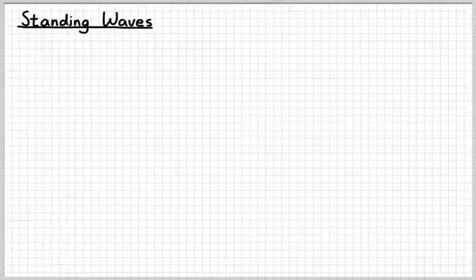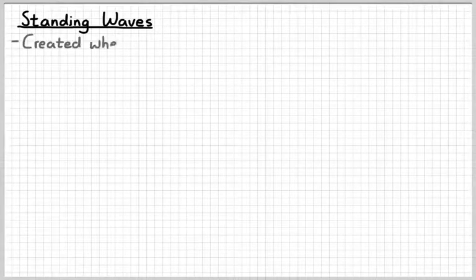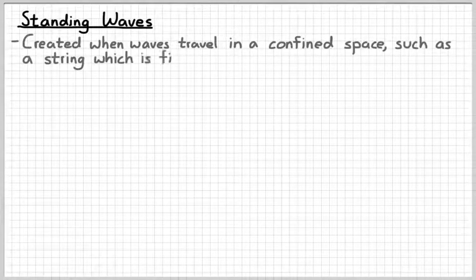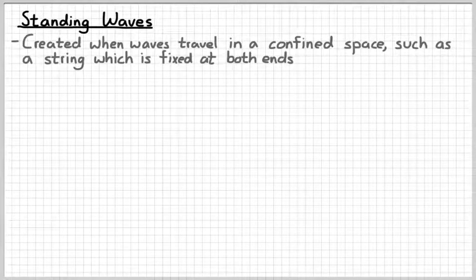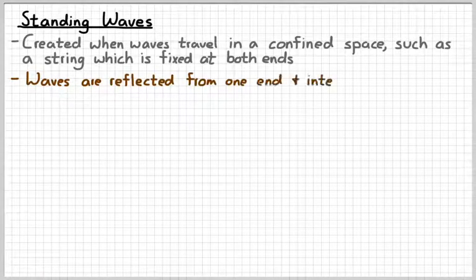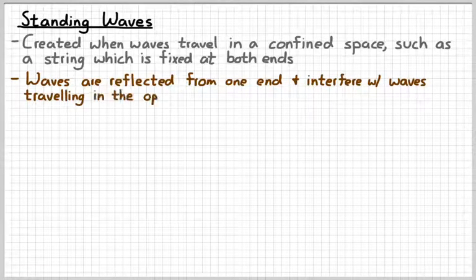In this video we're going to learn about standing waves. Standing waves are created when waves are traveling back and forth in a confined space. A good example we're going to start with would be a string which is fixed at both ends — like a guitar string. What happens in such a medium is that waves are reflected from one end and they end up interfering with waves traveling in the opposite direction from the other end.